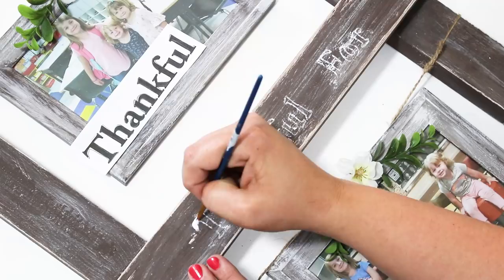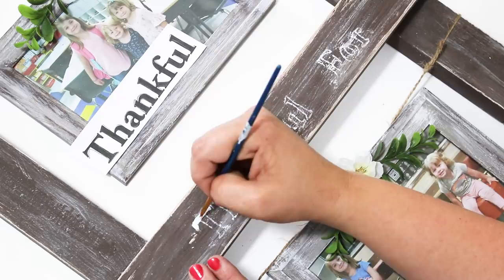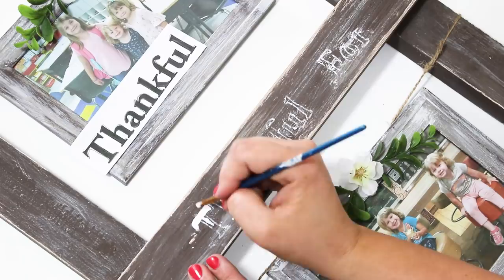After you trace over the lettering with a pencil it leaves behind the perfect stencil to paint over with a white chalk paint. So I'm just going to go in and fill this in. And this is so simple, I'm just using a tiny brush and then following the stencil that I did draw out.